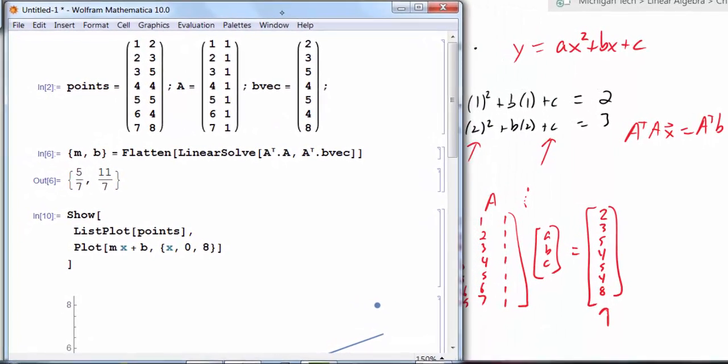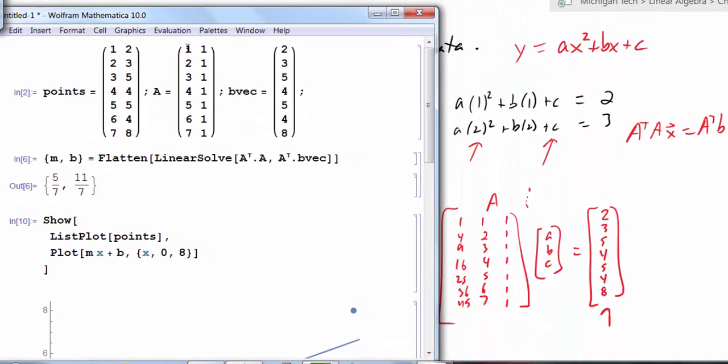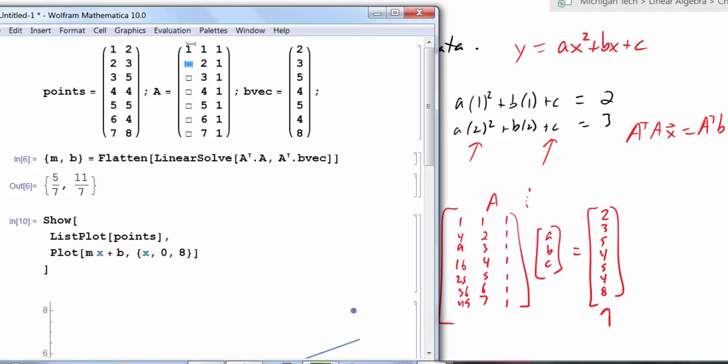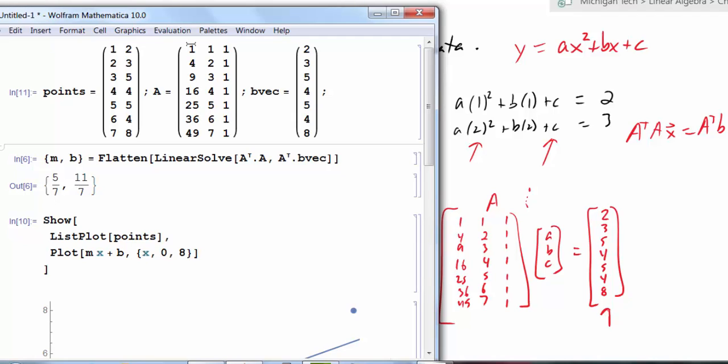All I really have to do is modify that A matrix. I will just go here. I will hit control comma to add a new column. This column is 1, 4, 9, 16, 25, 36, and 49. So now I have a new matrix A.